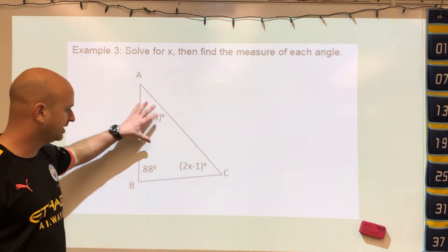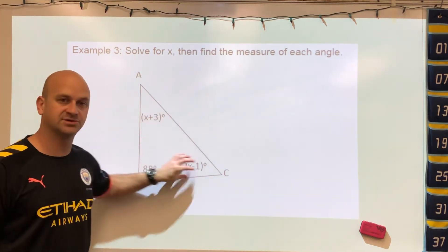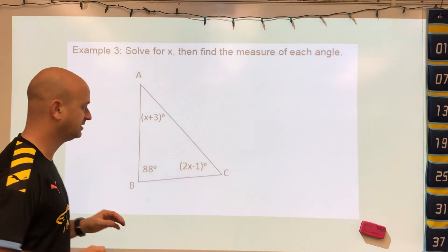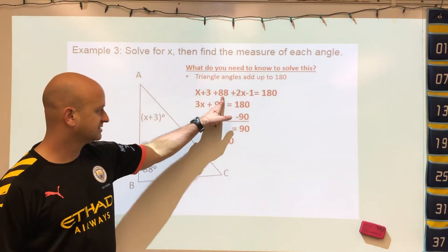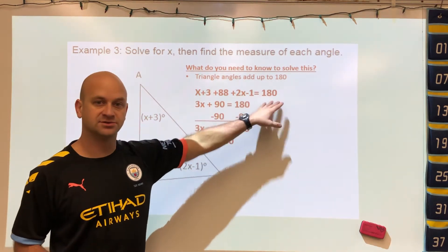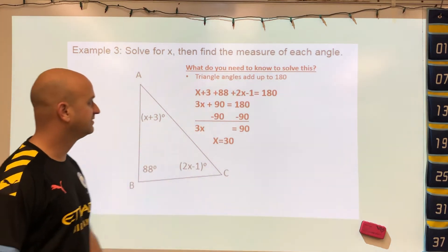In this problem now we go from numbers to equations. At the beginning we talked about all three angles have to add up to 180 degrees. So all we do is take the first angle plus the second plus the third and those would equal 180. We combine like terms, subtract the number, and we get our value.